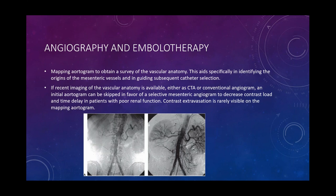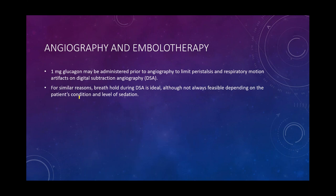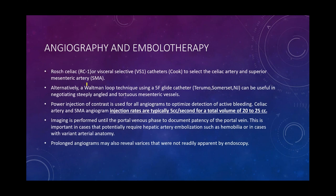A mapping aortogram can survey vascular anatomy before going selective or subselective; contrast extravasation is often not visible on the mapping aortogram, requiring more selective catheterization. Glucagon can be administered to limit peristalsis and respiratory motion during digital subtraction angiography. RC1 or VS1 catheters by Cook are recommended; Waltman's loop technique may also be tried. A power injection rate of 5 cc/second for a total volume of 20-25 cc can help optimize detection of active bleeds.